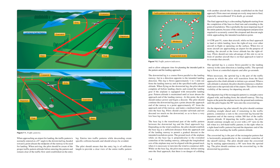14 CFR Part 91 states that aircraft while on final approach to land, or while landing, have the right of way over other aircraft in flight or operating on the surface. When two or more aircraft are approaching an airport for the purpose of landing, the aircraft at the lower altitude has the right of way. Pilots should not take advantage of this rule to cut in front of another aircraft that is on final approach to land or to overtake that aircraft. The upwind leg is a course flown parallel to the landing runway in the same direction as landing traffic, and is flown at controlled airports and after go-arounds.